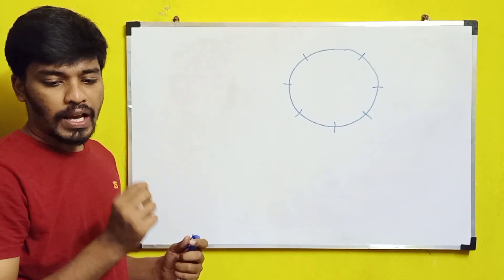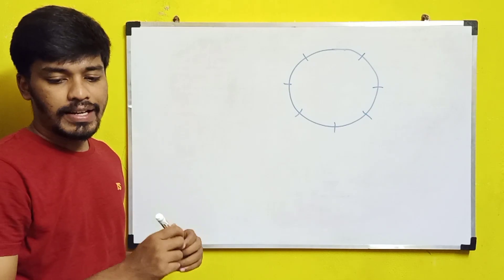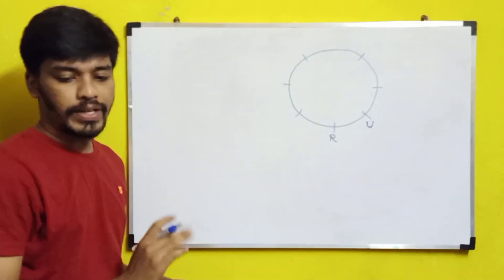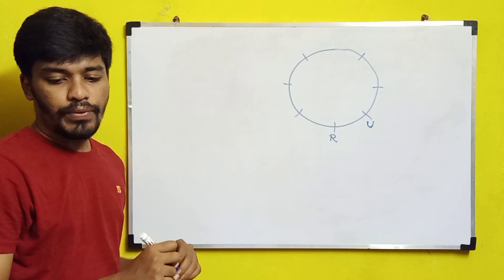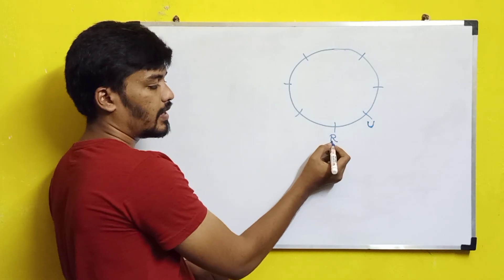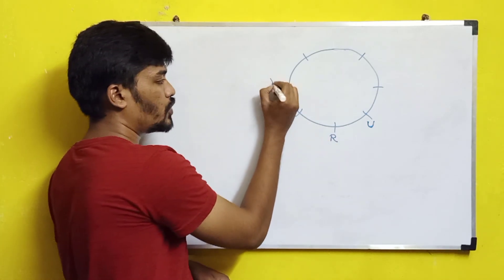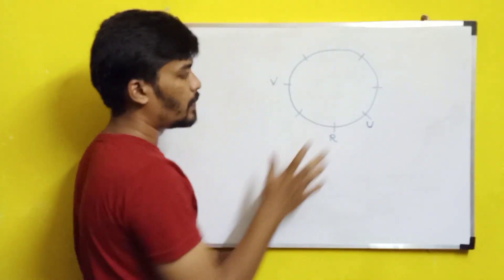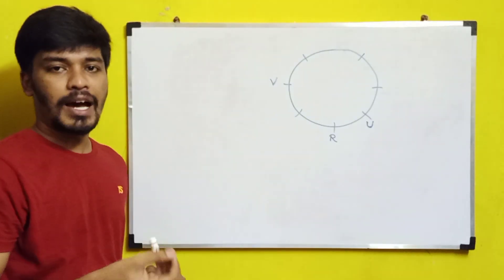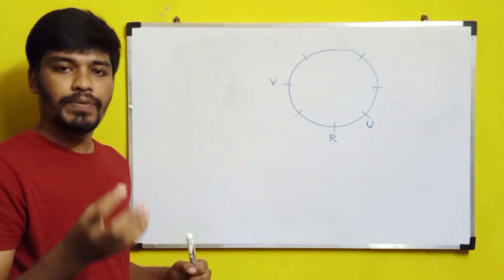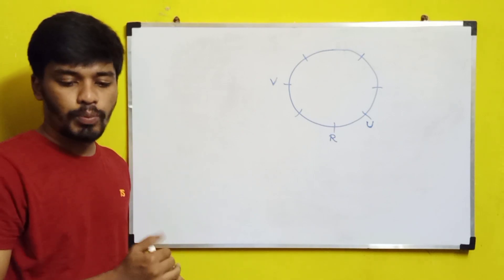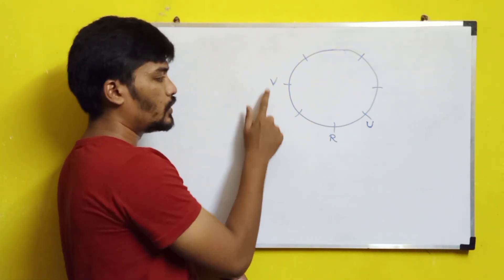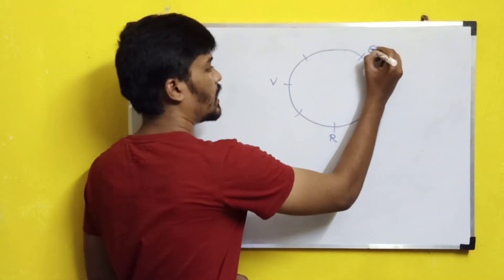Starting with the first clue: R is next to the left of U. If U is seated at a position, R will be seated immediately to U's left. Second clue: V is second to the left of R, so counting two positions to the left of R, V is seated there. For the third clue — P is third to the left of T — we don't yet know P and T's exact positions, so we'll handle that after. Last clue: Q is between S and T, so Q will be seated between them.